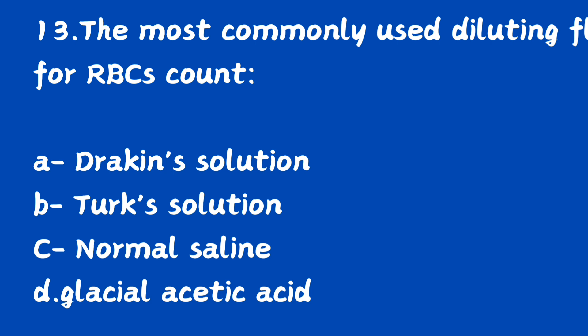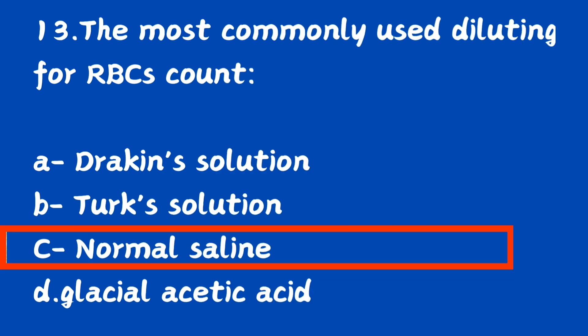Question number 13. The most commonly used diluting fluid for RBC count: option A, Drabkin solution; option B, Turk solution; option C, normal saline; option D, glacial acetic acid. Which is the most commonly used RBC diluting fluid? The right answer is option C, normal saline.